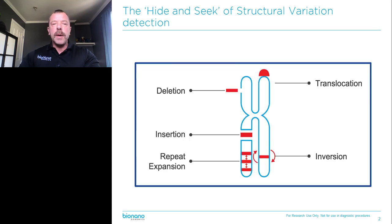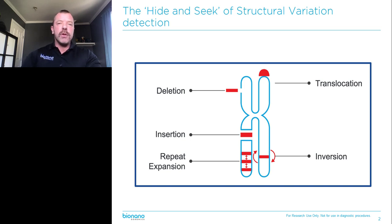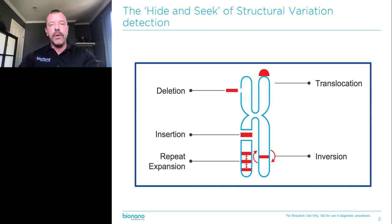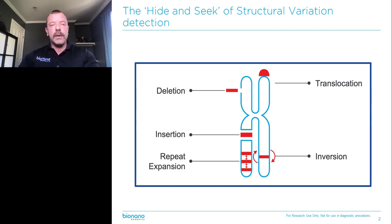When we're talking about structural variation, we're talking about these large rearrangements of the genome where there's typically no major gain or loss of material. It could be a balanced event like an inversion or a translocation, or an unbalanced event like a deletion, insertion, or repeat expansion.